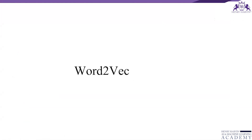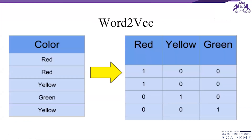In this video we are going to discuss the most important concept: Word2Vec. Looking at this example, you can see red, yellow, and green. The corresponding red column is one and the remaining two are zeros. Red is one-zero-zero, yellow is zero-one-zero, and green is zero-zero-one. So it is basically converting text into numbers.